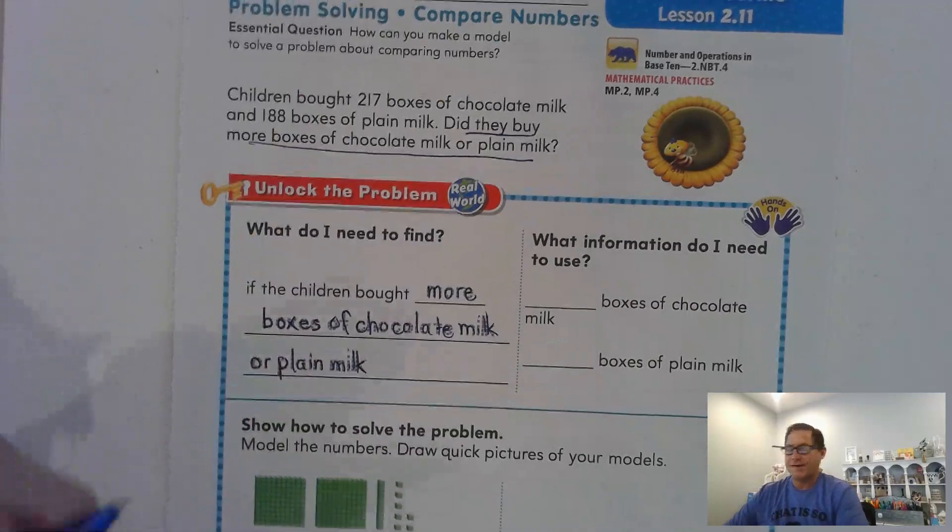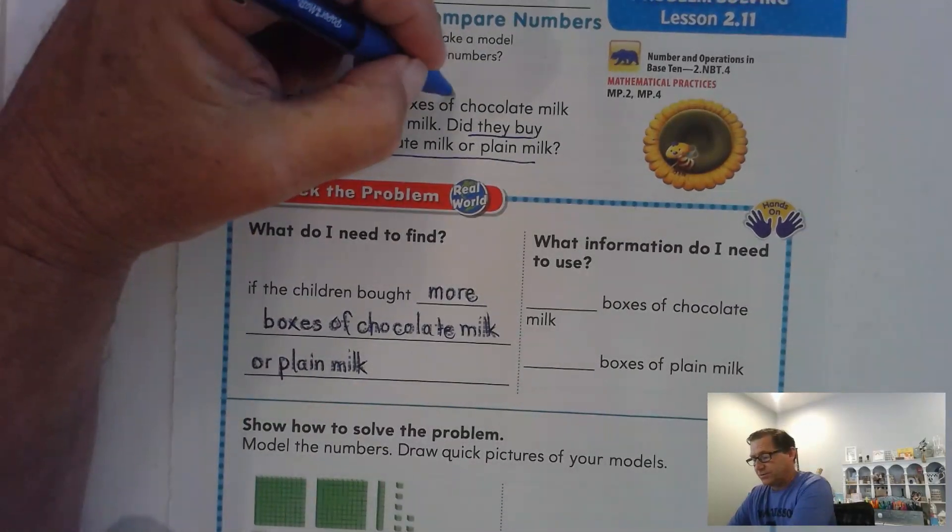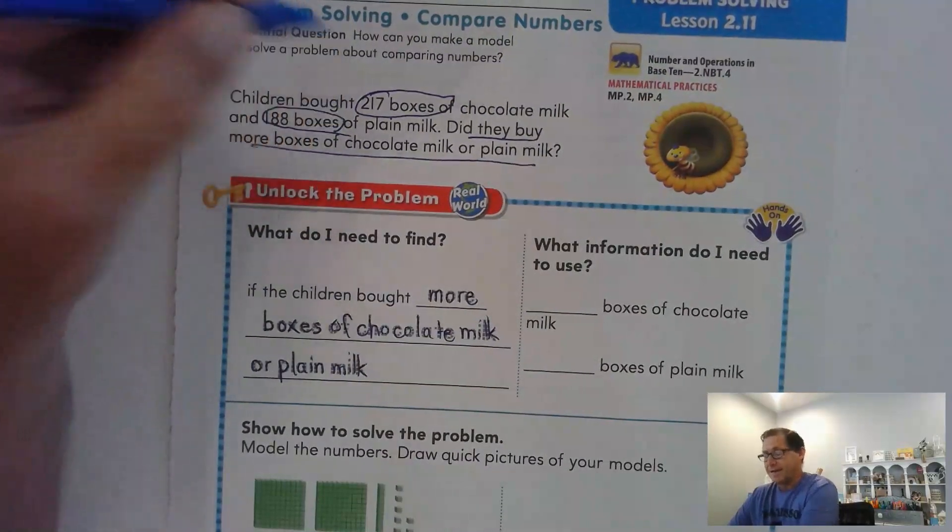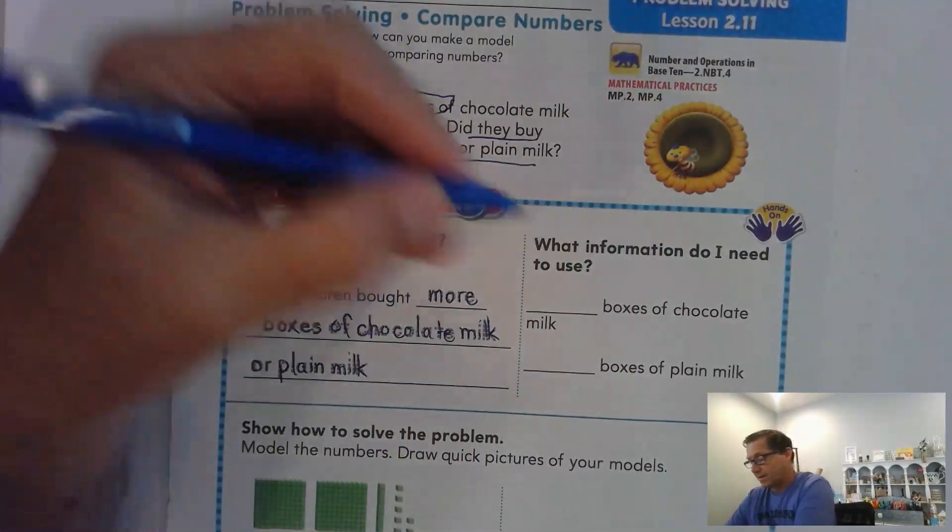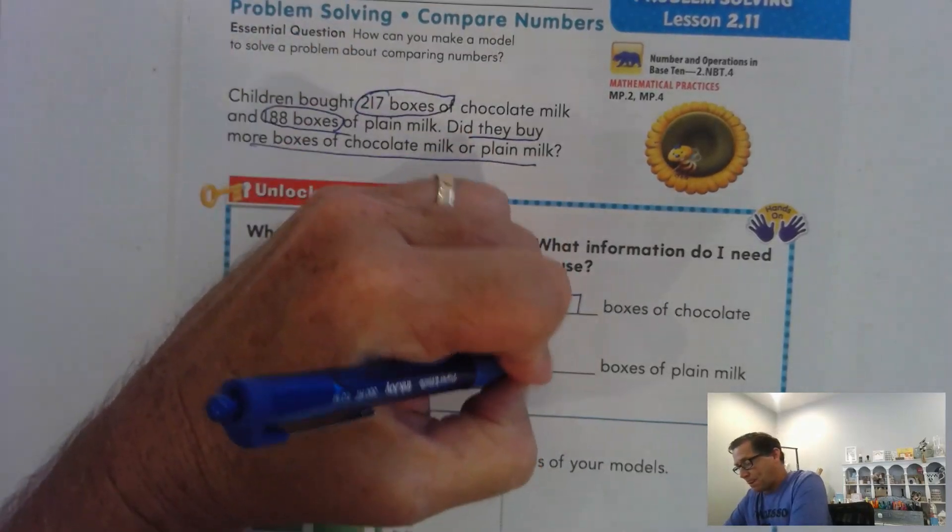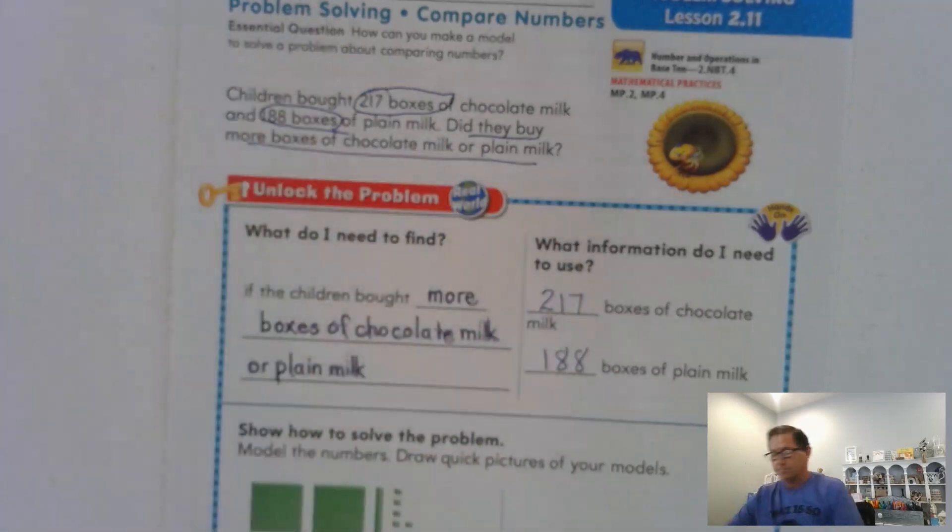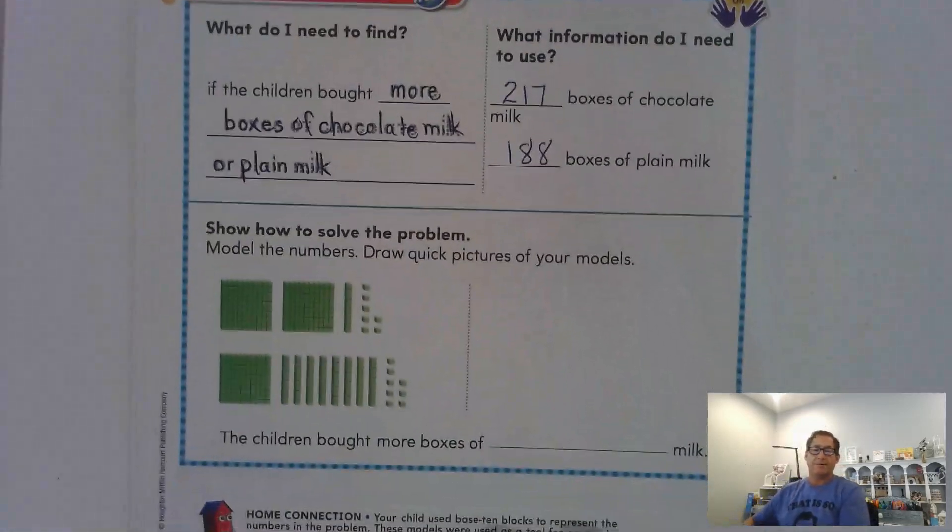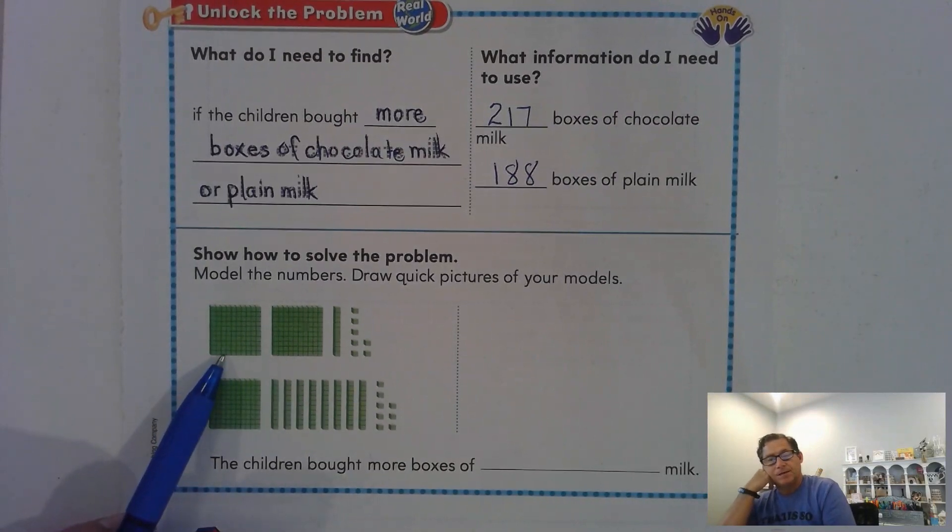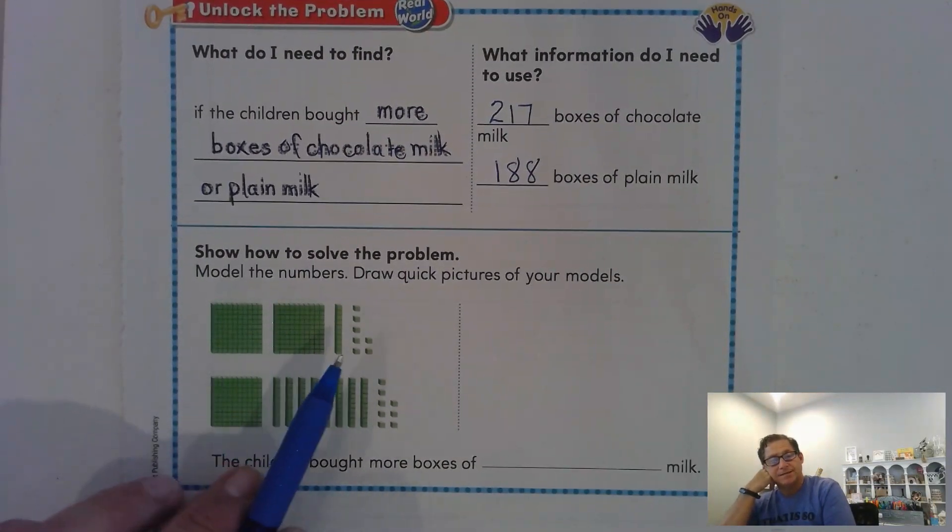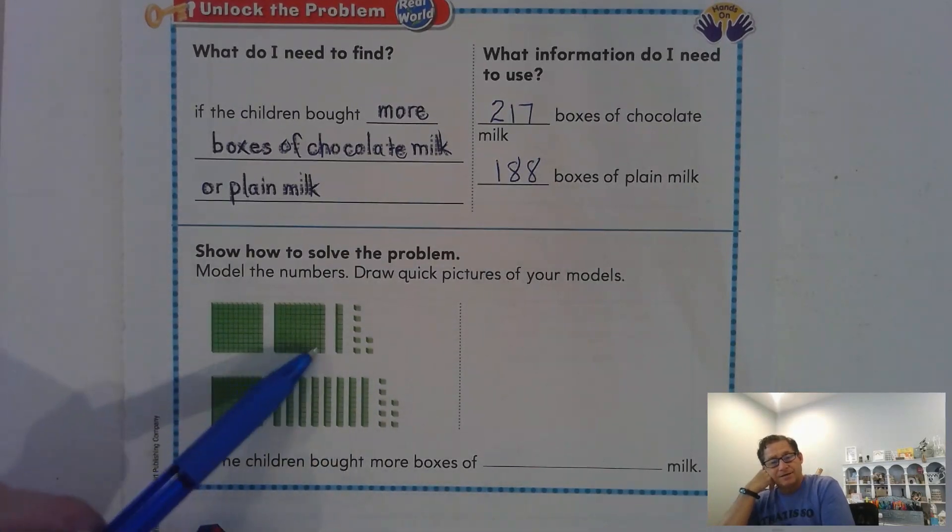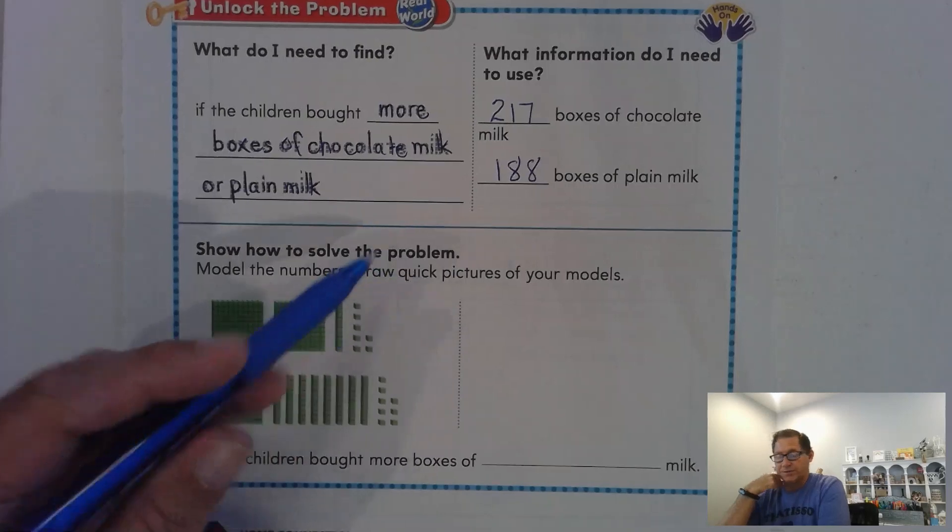I'm going to trace what was written. So I'm trying to find which one was more, boxes of chocolate milk or plain milk. And what information do I need to use? I know that there's 217 boxes of chocolate milk and 188 boxes of plain milk. So the point of this lesson is to draw models.